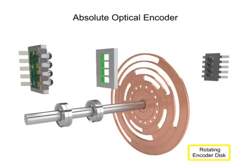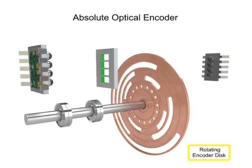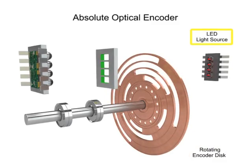A rotating encoder disc, a light source such as an LED, a photo detector as the light sensor, and a signal conditioner that converts the signals into square waveform.